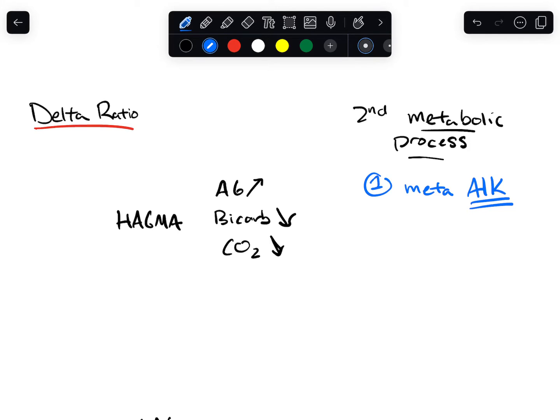So you could imagine, if I have my HAGMA, and on top of that have a metabolic alkalosis, my anion gap shouldn't really change much, but now I have a process that's going to drive my bicarb higher.